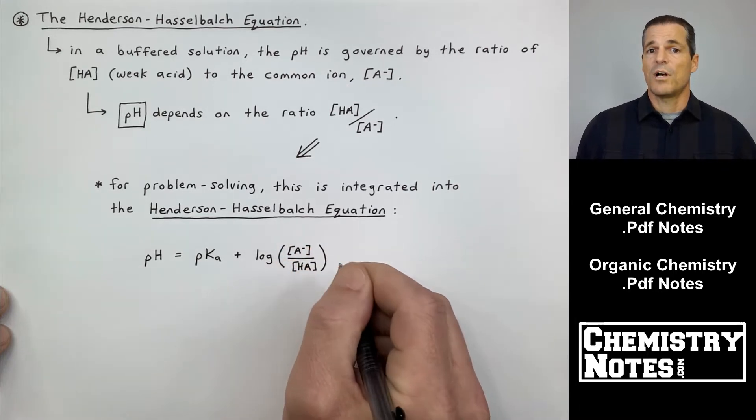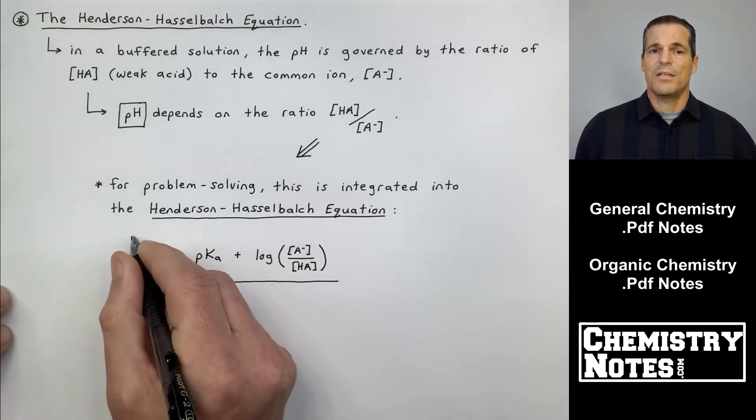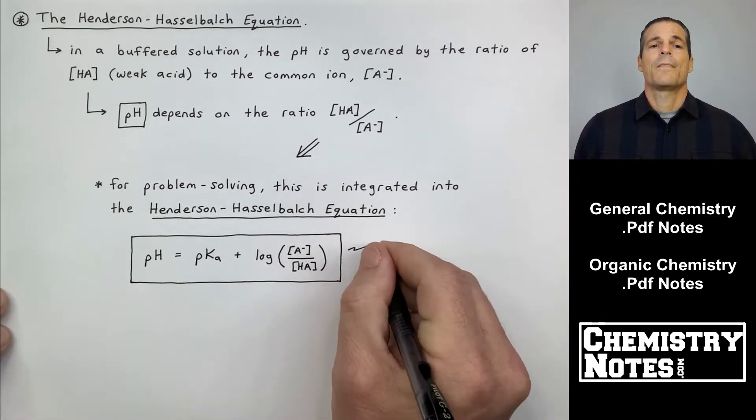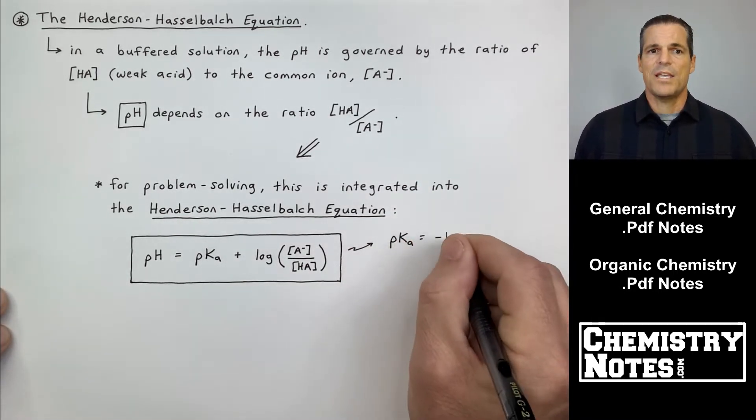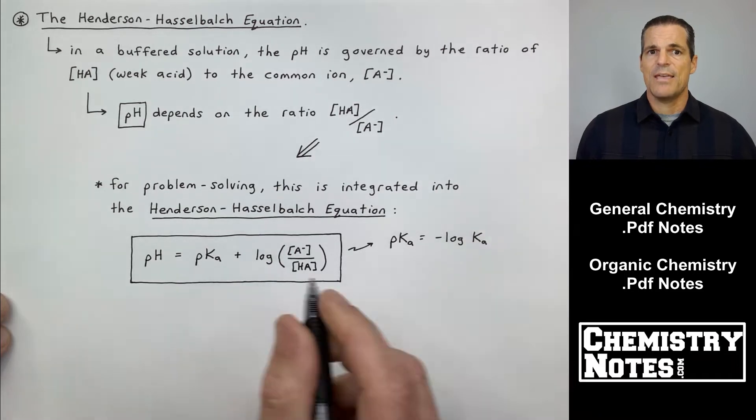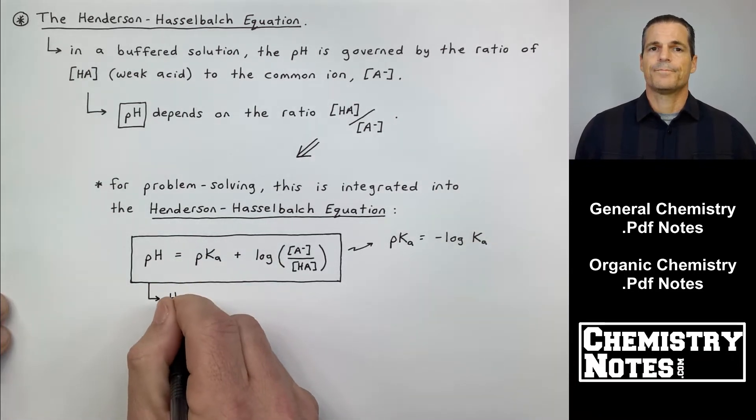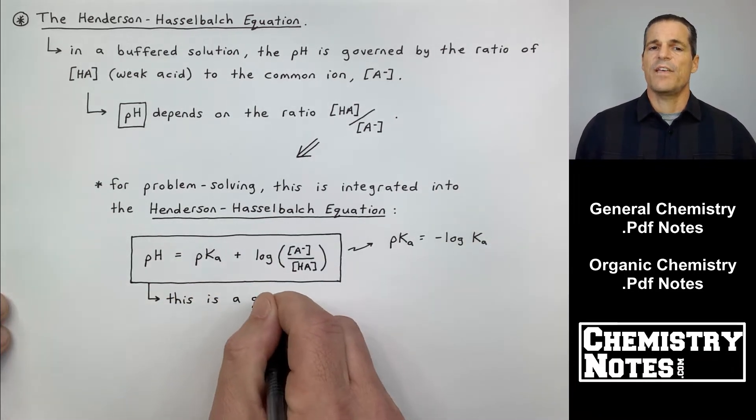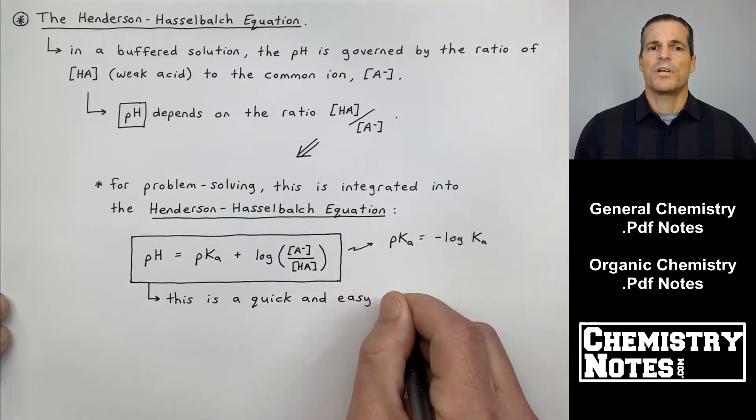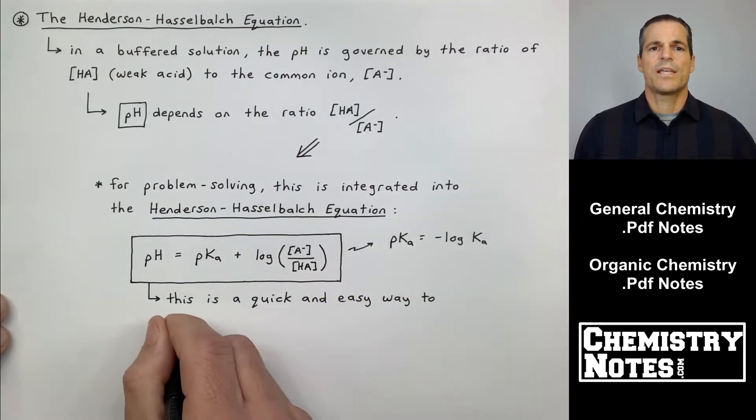Now for problem solving, this can be integrated into the Henderson Hasselbalch equation. So remember this equation: pH equals pKa plus the log of the concentration of A minus, my common ion, over the concentration of HA, my weak acid.